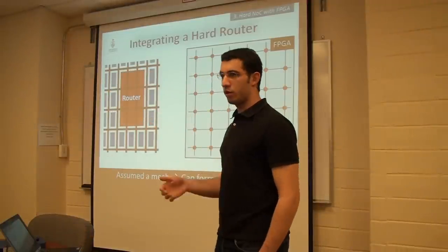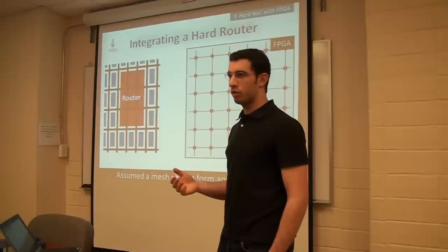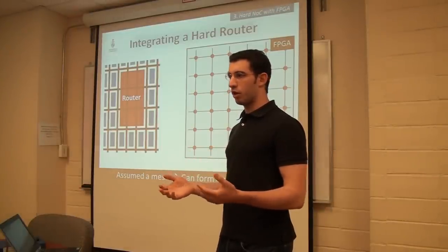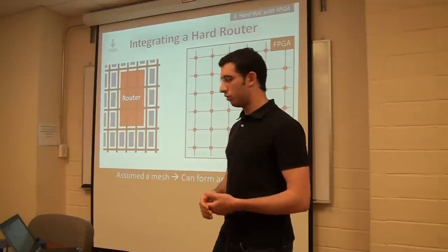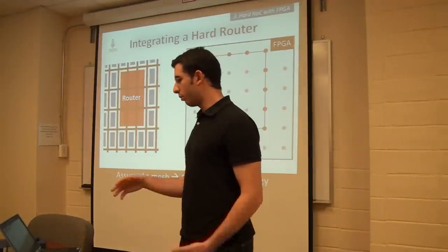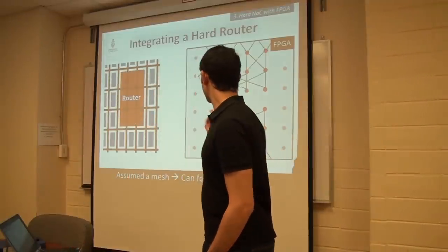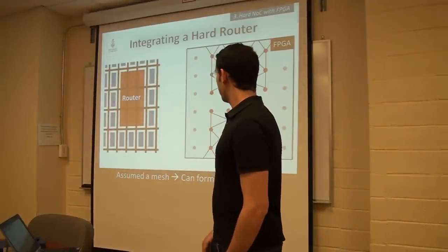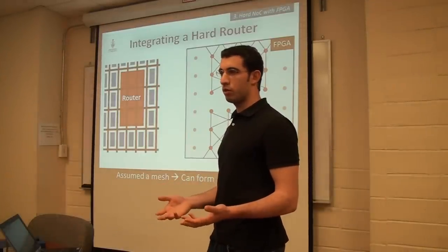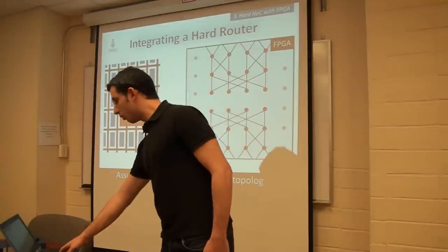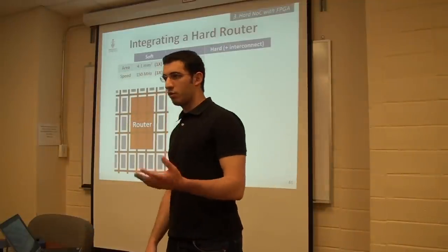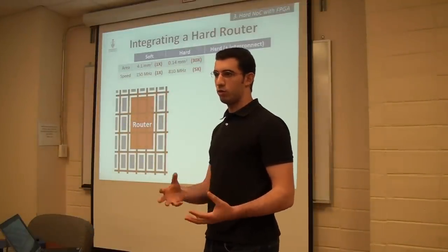Although I assumed a mesh topology in the picture, because we use the FPGA routing to connect routers, we can implement any topology — a ring, a pseudo-butterfly network, even two separate networks simultaneously. There's no restriction: we pre-program the routing table in each router and it works. A fully custom topology is also possible, which we see as a strength of combining soft interconnect with hardened routers.